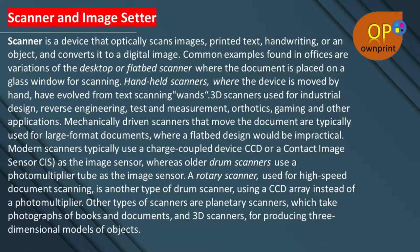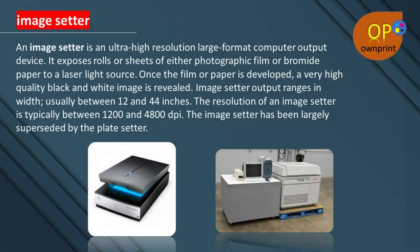The next topic is the image setter. An image setter is an ultra-high-resolution, large-format computer output device. It exposes roll or sheet photographic film or bromide paper to a laser light source. Once the film or paper is developed, a very high-quality black-and-white image is revealed. Image setter output ranges in width, usually between 12 and 44 inches. The resolution of an image setter is typically between 1200 and 4800 dpi. The image setter has been largely superseded by the plate setter.